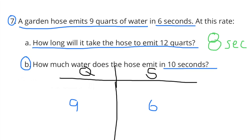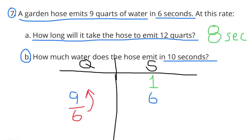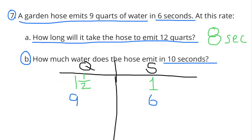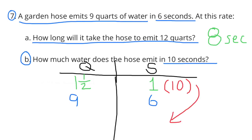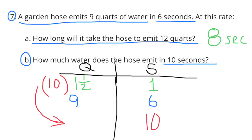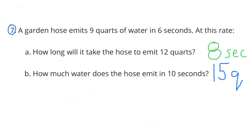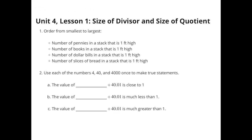B: how much water does the hose emit in 10 seconds? 6 seconds divided by 6 equals 1 second, and 9 quarts divided by 6 equals 1 and a half quarts. That concludes Lesson 1: Size of Divisor and Size of Quotient.